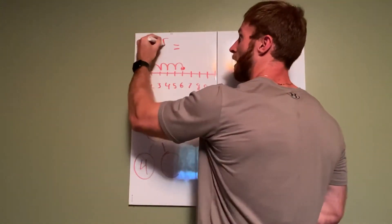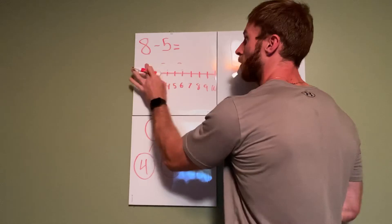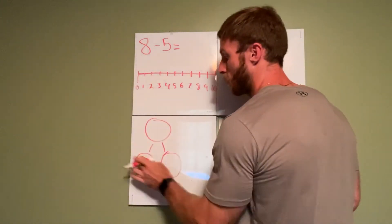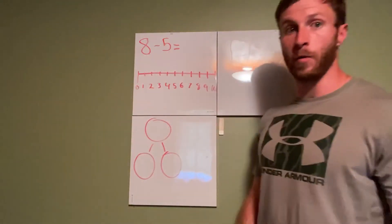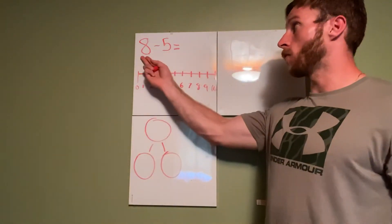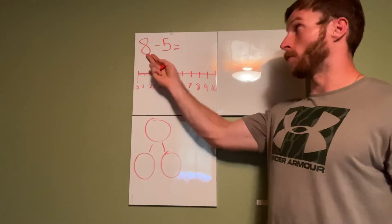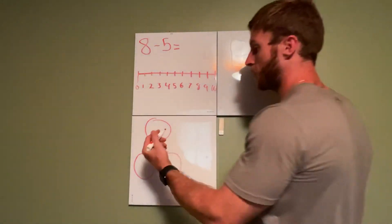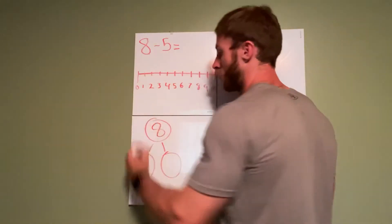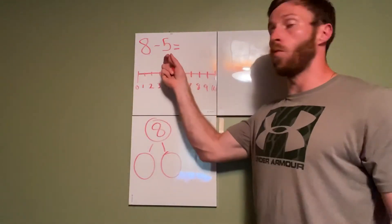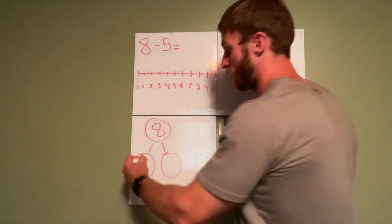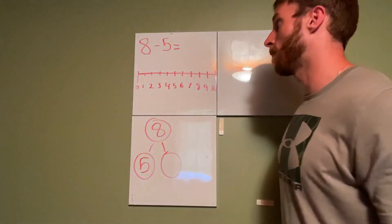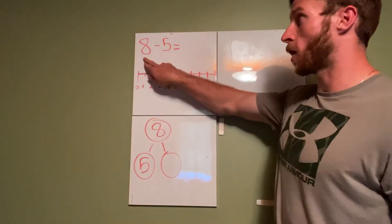Let's do eight minus five and erase all this. All right, so if we were to fill in our number bond, we start with our whole for our number sentence. We start with our whole which is our biggest number which is eight, so that goes in our whole section. Then we are subtracting one of the parts which is five, and once we do that we will find our missing part.